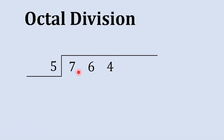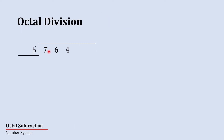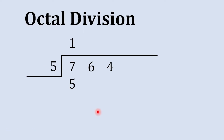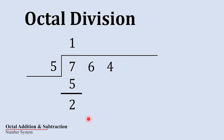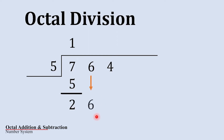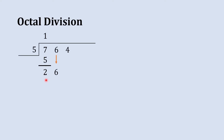First of all, we'll see: is 7 larger than 5? Yes it is, so we can divide it by 5. 5 ones are 5, and now we'll do subtraction — 7 minus 5 gives us 2. Then we'll bring this 6 down, so we have 26. Now this 26 is an octal number, and this 5 is also an octal number.